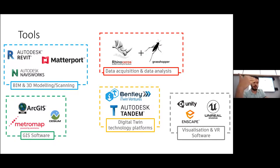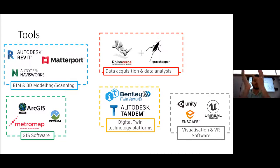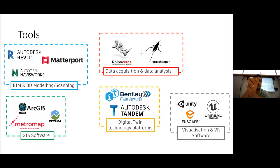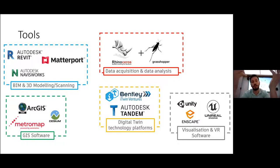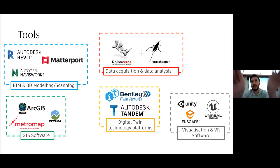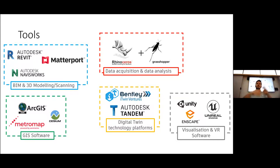Matterport is used in real estate — on realestate.com.au you can sometimes see the 3D of an apartment plan. For GIS, we have ArcGIS and MetroMap, an Australian-based company that scans cities using planes, drones, and LiDAR technology. This is similar to what you see in Google Earth when you can rotate around a building and see it in 3D — that's the kind of technology that helps move toward digital twins.